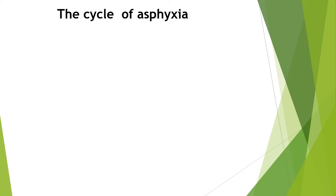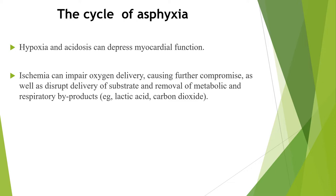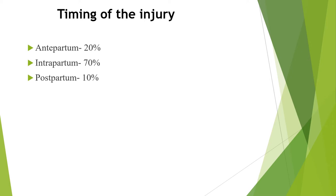When we see the cycle of asphyxia, hypoxia and acidosis can depress myocardial function, and ischemia can impair oxygen delivery, causing further compromise, as well as disrupting the delivery of substrate and the removal of metabolic and respiratory byproducts like lactic acid and carbon dioxide.